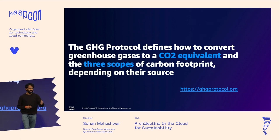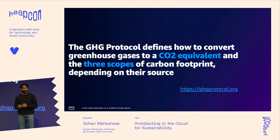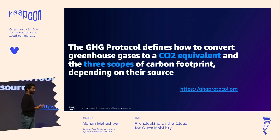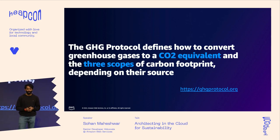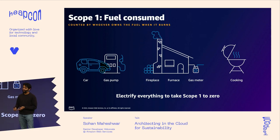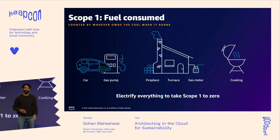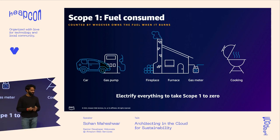Let's get into the terminology. The GHG, or Greenhouse Gas Protocol, defines how to convert greenhouse gases to a carbon dioxide equivalent across three scopes of carbon footprint. Scope one is fairly straightforward — it's the fuel consumed. Whoever essentially owns the fuel when it burns is scope one. In a car burning fuel while driving, that's scope one. When you're cooking using oil, that's scope one.